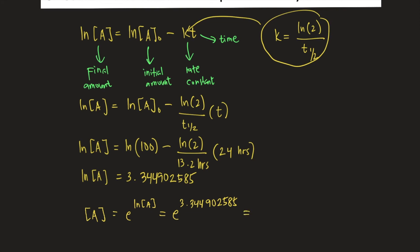So you plug this into your calculator. Find the constant e. Raised to 3.344902585, and that is equal to 28.4%.